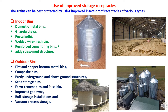As an alternate approach, improved storage receptacles can be used. Grains can be best protected using improved insect-proof receptacles classified into two types: indoor bins and outdoor bins. Indoor bins used for small storage include domestic metal bins, gharalu theka, pakka kothi, welded wire mesh bins, reinforced cement ring bins, and extra mud structures for small volume storage. Outdoor bins include flat-bottom and hopper-bottom metal bins, composite bins, partially underground and above-ground structures. There are also seed storage bins, ferro-cement bins, improved godowns, bulk storage installations, and vacuum process storage facilities.